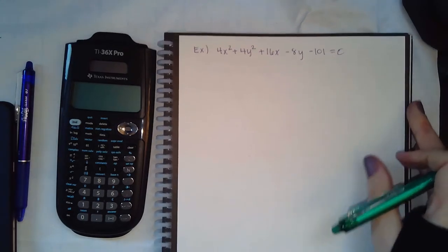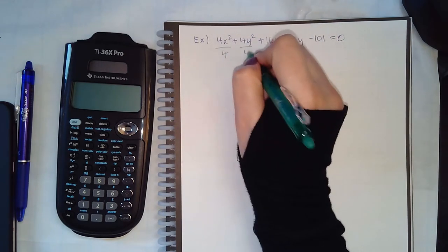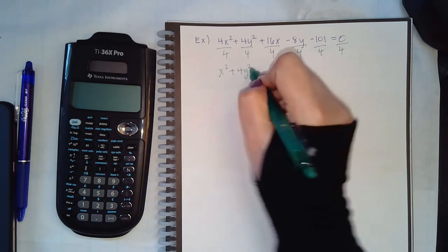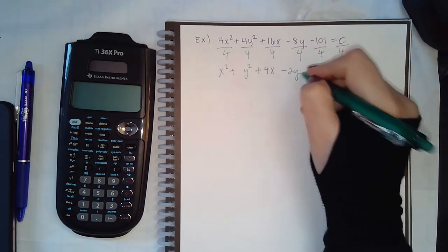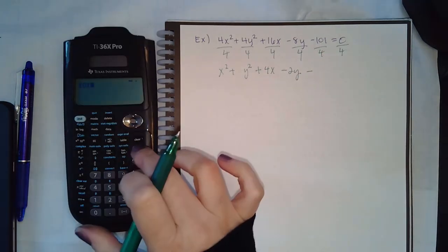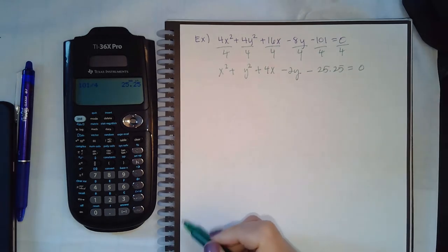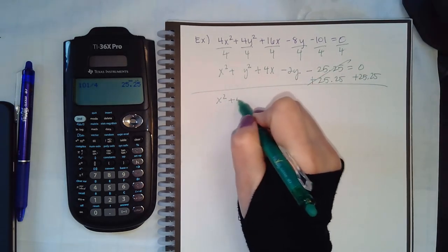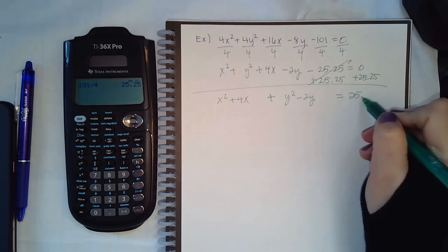For the next example we again have a leading coefficient, this time 4, so we divide every term by 4. The 4 cancels on the y squared term, giving x squared plus y squared plus 4x minus 2y minus 25.25 equals 0. Move the constant to the other side and regroup: x squared plus 4x, then y squared minus 2y, with positive 25.25 on the right.